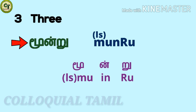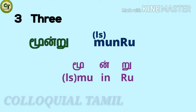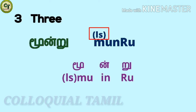For three: 'moonru'. Moon — a long vowel letter with a consonant, ru — a short letter together: moonru. I use 'l' to represent the long vowel letter. You should pronounce it as moonru.